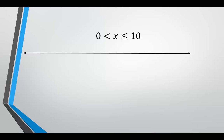Another between, but this time one is strictly less than and the other is less than or equal to. We have 0 less than x, which is less than or equal to 10. Locate 0 and 10 using a 5-unit breakdown. x is always to the right of 0, but 0 is not included, so we put parentheses. It's less than or equal to 10, so x stays to the left of 10 and it could be 10, so we put a bracket. The interval notation is: parentheses 0, comma, 10, close bracket.